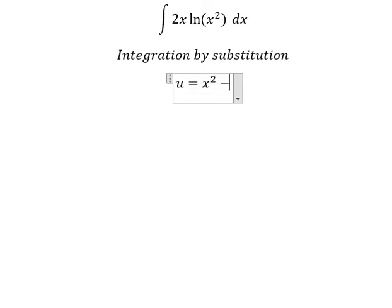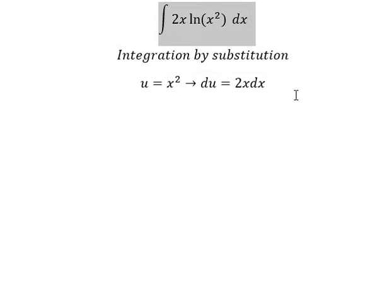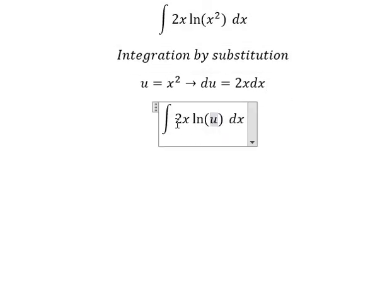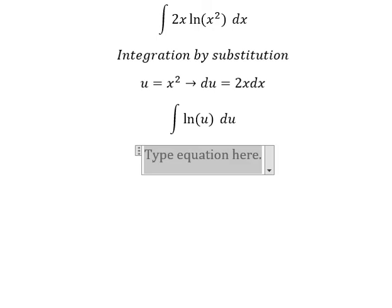We take the first derivative of both sides, so du equals 2x dx. We change the integral in terms of u. Next we need to use integration by parts.